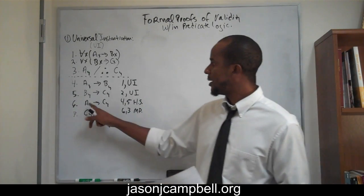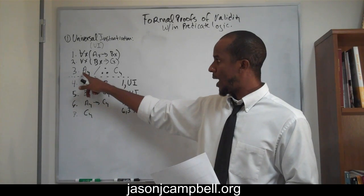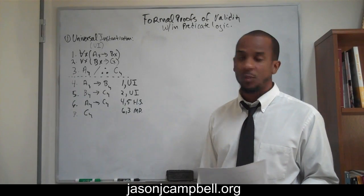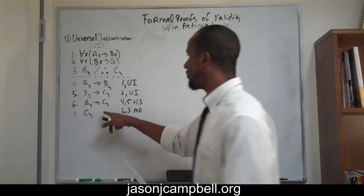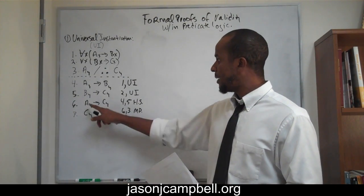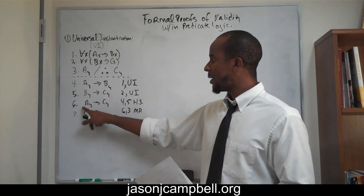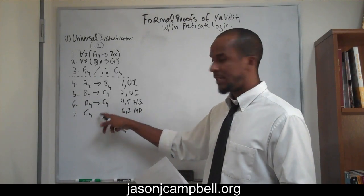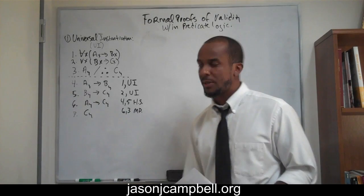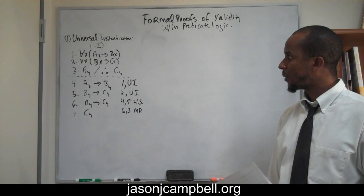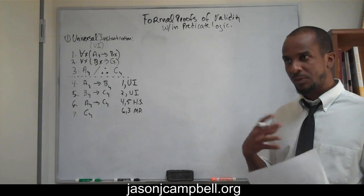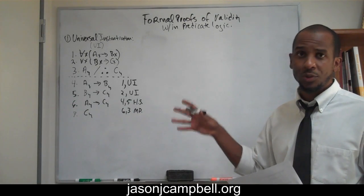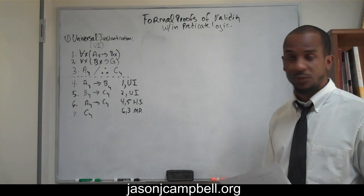Some of you might not have immediately seen Ay here — could you still have deduced the conclusion maybe a step or two more? Well, yes. On line 6 you could have done a material implication — you would have gotten not-A or Cy, i.e., not-Ay or Cy, and you can still get Cy by applying material implication. There are many ways to solve a problem like this, and this is just one example. My intention in presenting these formal proofs of validity is to expose you to the method of solution so you can attempt to solve problems of similar form yourself.